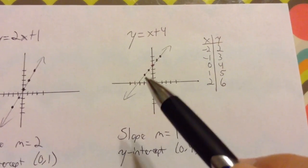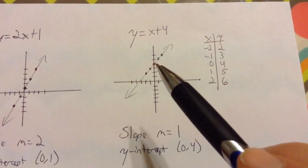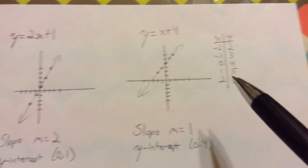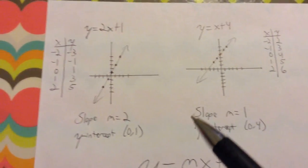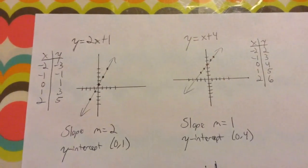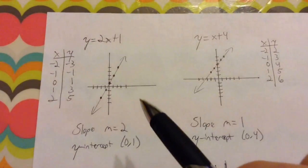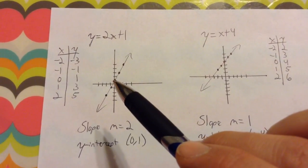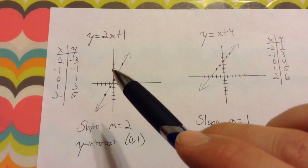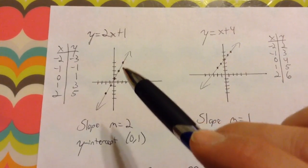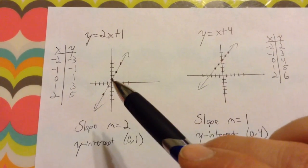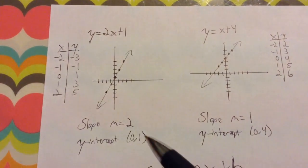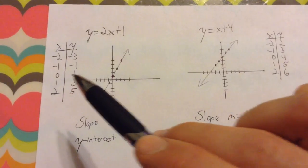So you get these points, and notice your y-intercept again here is (0, 4). When I ask you what is the slope and y-intercept, you should be able to see it happening here: up 2 over 1 each time, and your y-intercept is at (0, 1), which is what we found in the table.